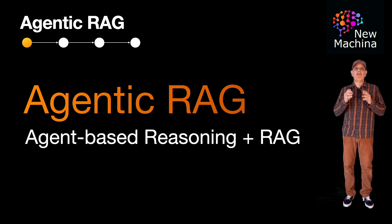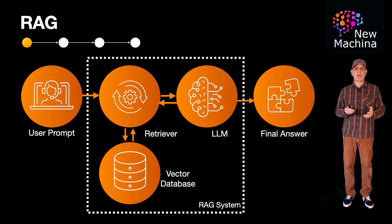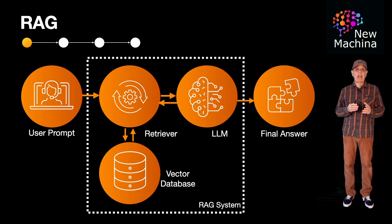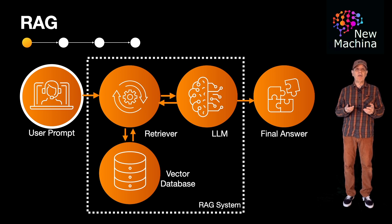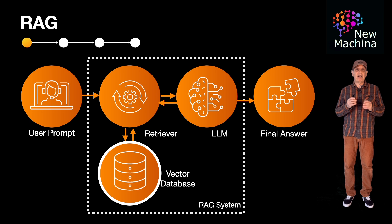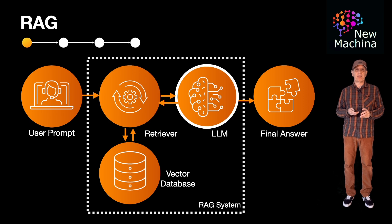Many of you are already familiar with RAG, but let me quickly summarize it to get us all aligned. Retrieval augmented generation, or RAG for short, combines a large language model with an external data source, typically a vector database, enabling the RAG-driven system to retrieve relevant information in real time to generate more accurate, context-specific responses. The user sends a prompt to the RAG system. The retriever uses it to perform a similarity search on the vector database. Semantically similar documents are returned and included as context with the original user prompt and sent to the LLM, which uses both to generate a final response.